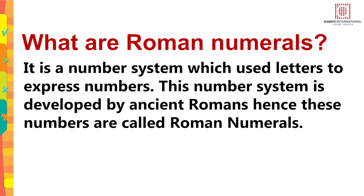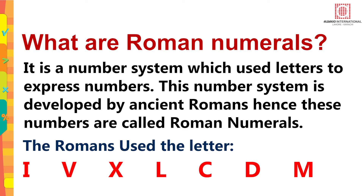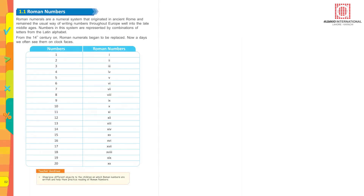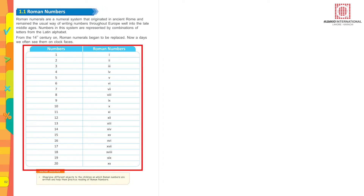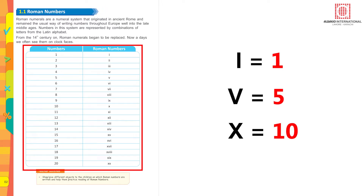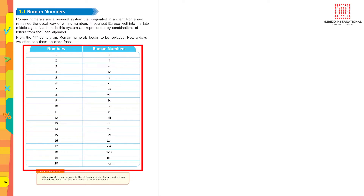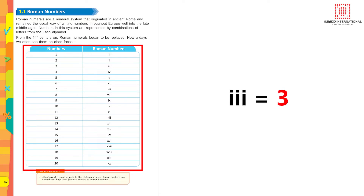The Romans used the letters I, V, X, L, C, D, M. Today we are only going to learn numbers up to 20 in Roman numerals. I is equal to 1, V is equal to 5, X is equal to 10. When we have to write 1, you just write I. Two I's is equal to 2, three I's is equal to 3.